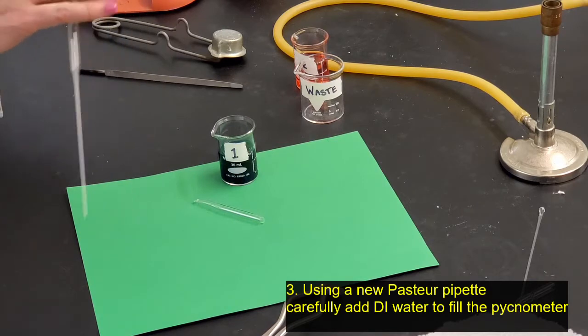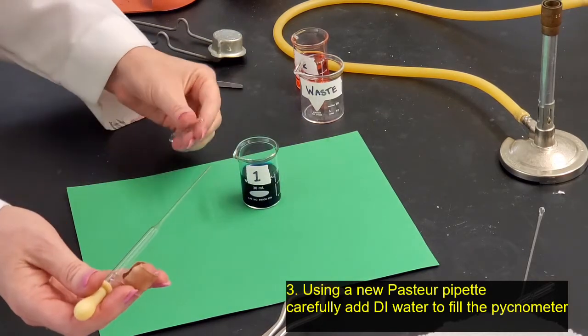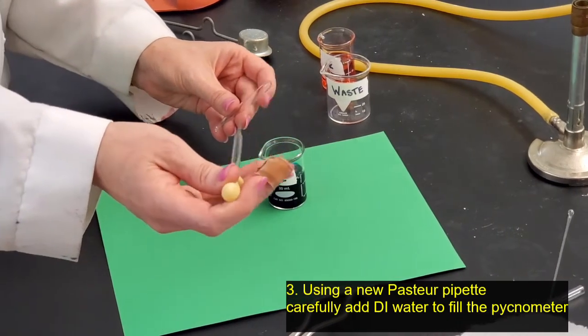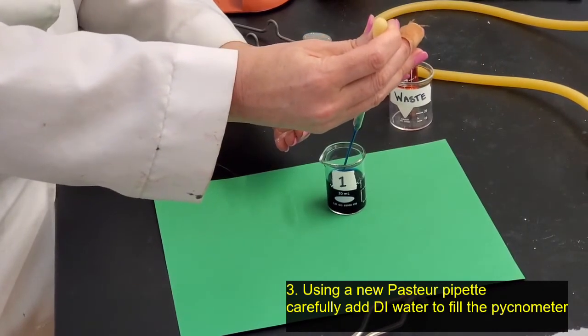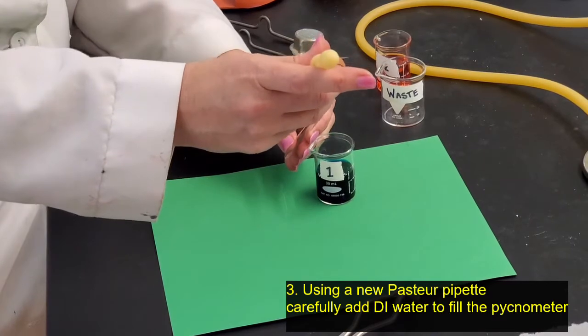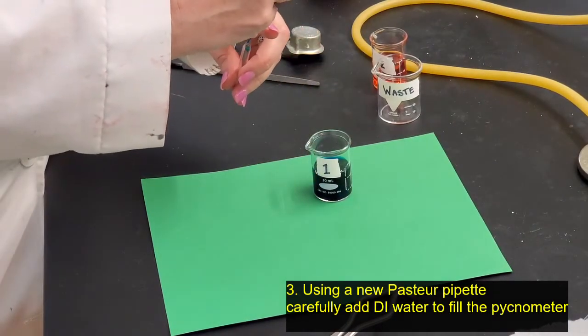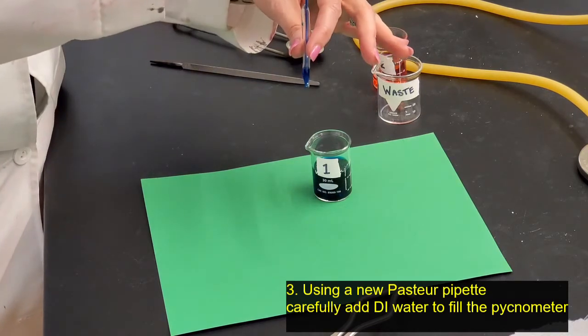I'm going to get a brand new Pasteur pipette from the box on top of the counter, place the rubber bulb on there, and use this to transfer the water into the pycnometer. Now when I place this in the pycnometer, I'll need to put the stem of the pipette all the way down to the bottom of the pycnometer. This is why it's important to have a large opening on the pycnometer.